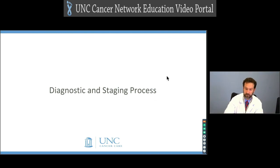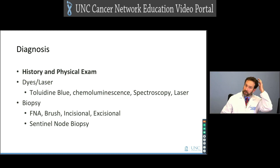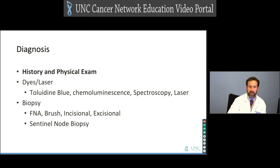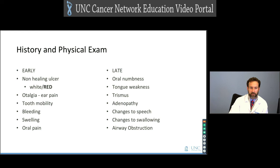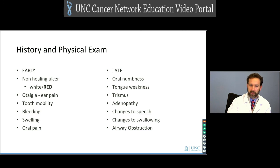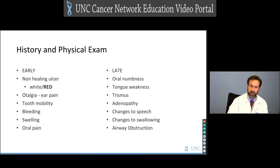We're going to move on to diagnosis and staging. The most important thing is history and physical exam — there are some ancillary tests that can be helpful, but history and physical is the main function for diagnosis. We think about catching patients early: non-healing ulcers, erythroplakic lesions, tooth mobility, bleeding, and swelling are early signs. More advanced signs — indicating lesions that have been present for a while — include oral numbness from lingual nerve involvement, tongue restriction from extrinsic tongue muscle involvement, tongue weakness from hypoglossal involvement, and trismus from pterygoid involvement, causing difficulty with speech, swallowing, and airway obstruction.